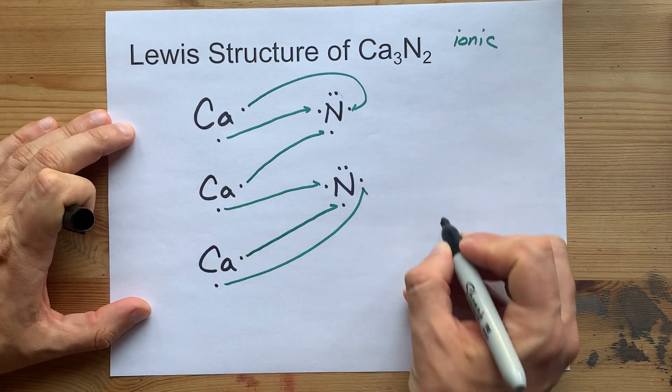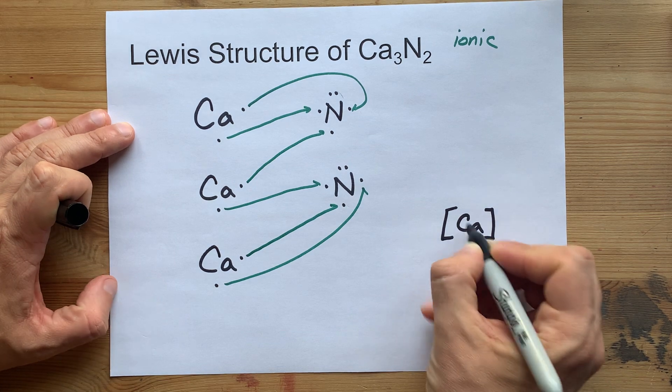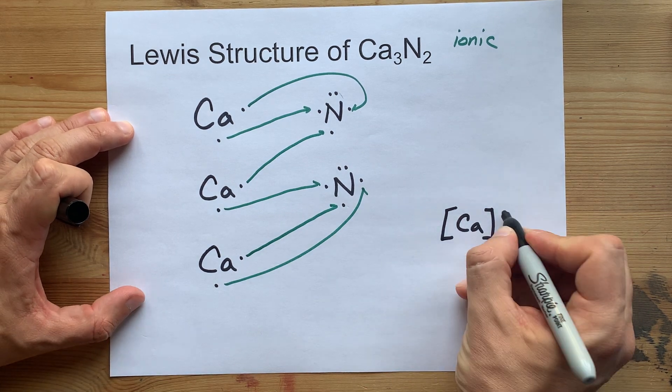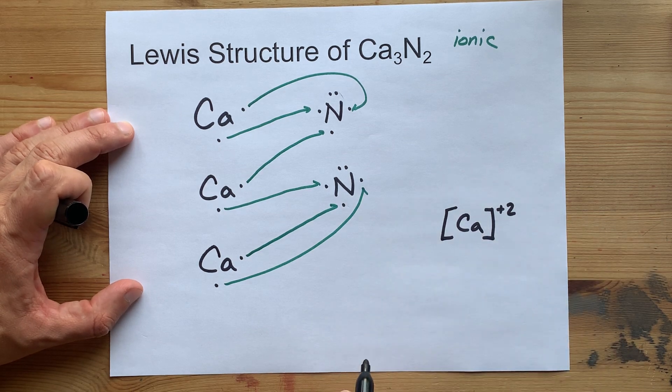Your calcium ions have no electrons left around them. So, don't draw any dots around your CAs, right? Plus two to show that they lost two electrons each.